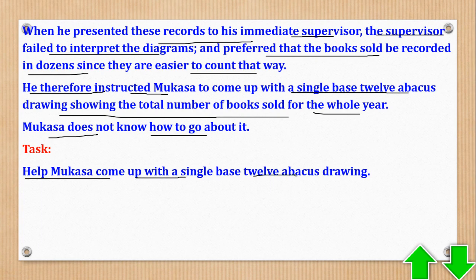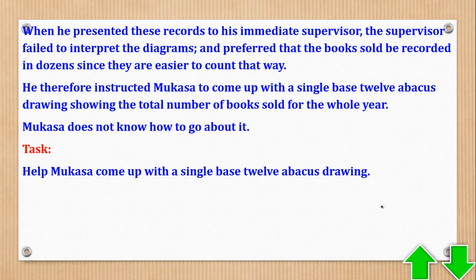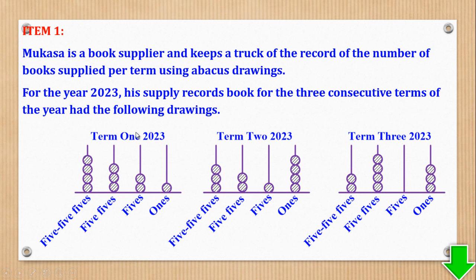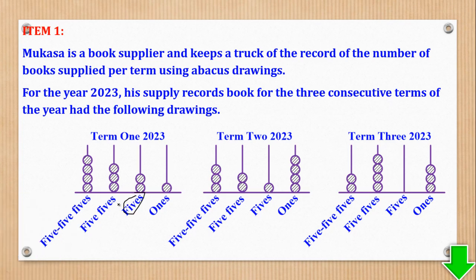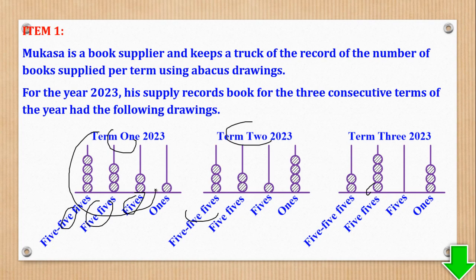This item is under number bases — the very first chapter in Senior 1. When you see 5's on the abacus, it means the abacus is in base 5. So our work is to first read off these abacus drawings in base 5.